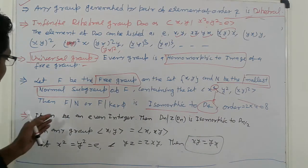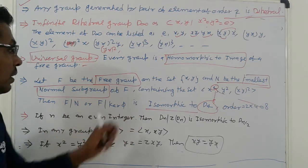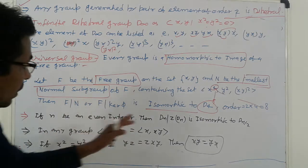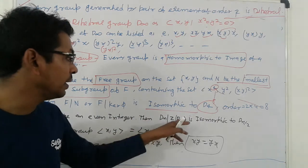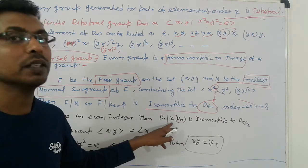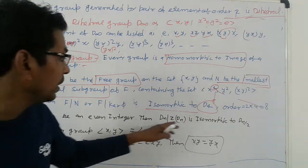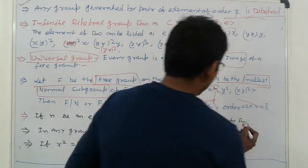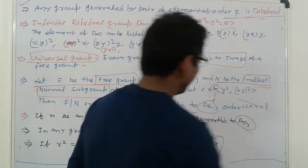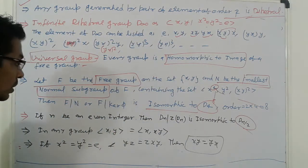Next, if n is an even integer, then Z(Dn) — the center of elements — is isomorphic to Dn/2. Again, another rule follows.